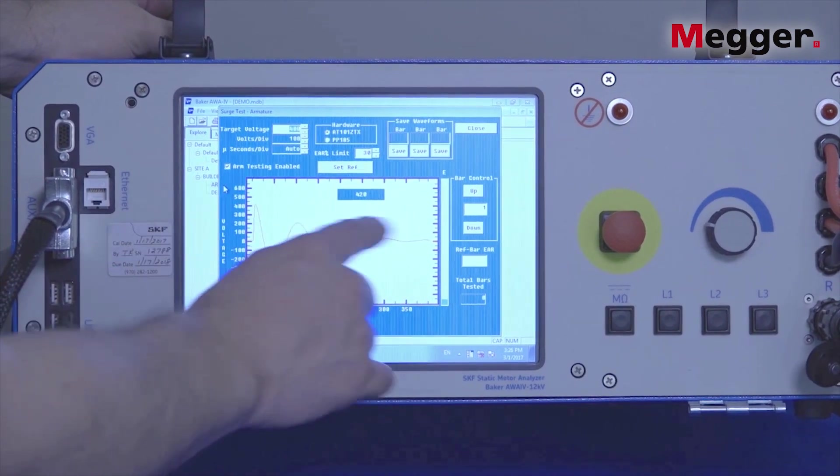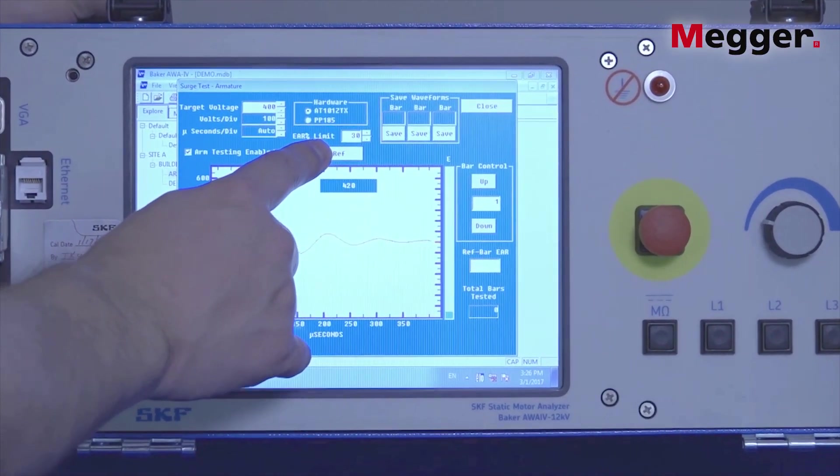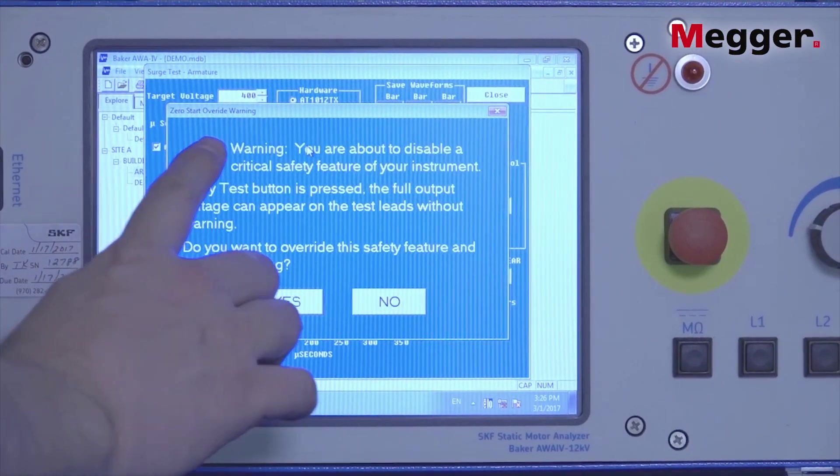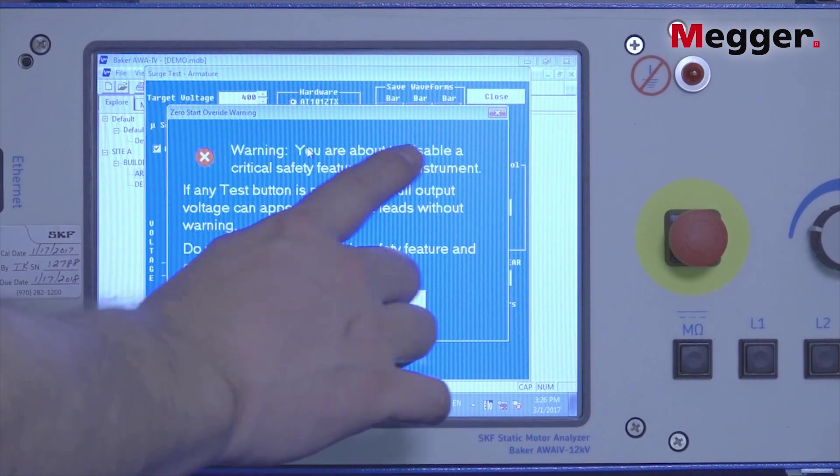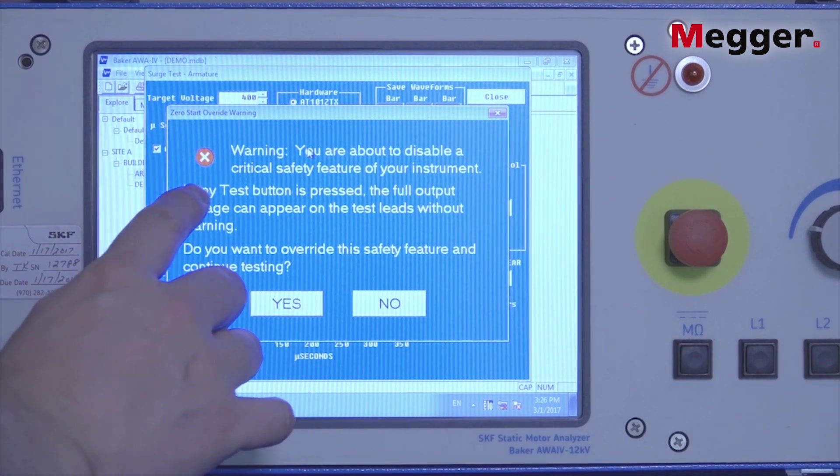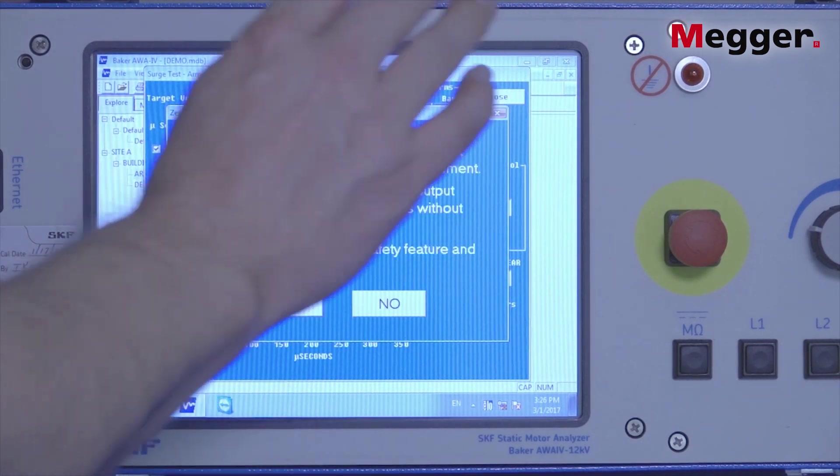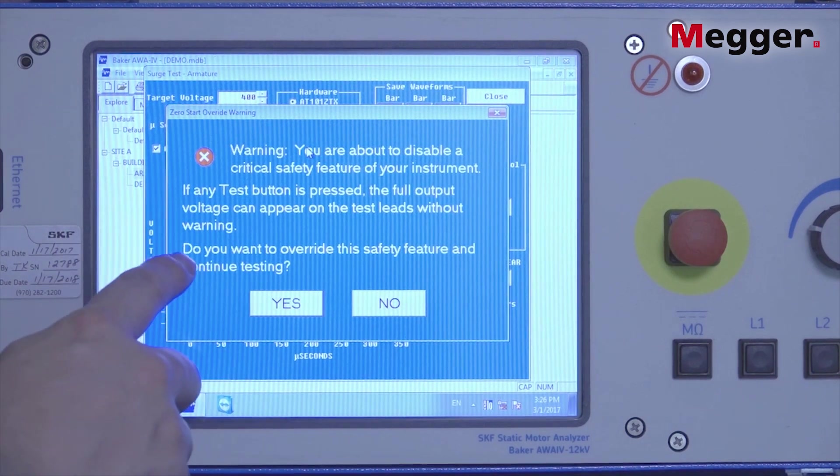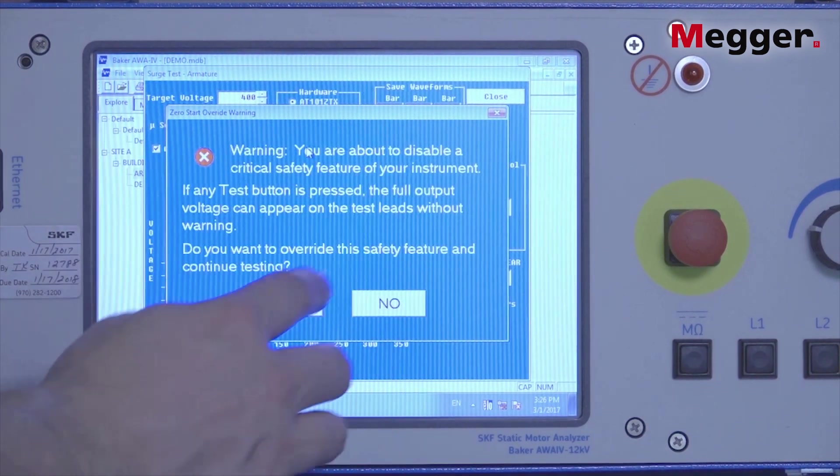If you're satisfied with the wave, hit that set reference button. We'll have a warning that we're about to disable a critical safety feature of your instrument, so that anytime we hit the test button, the voltage is going to go right back up to our test voltage. We want to do that for armature testing only.